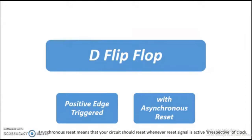First, we take the case where the D flip-flop is positive edge triggered and with an asynchronous reset. Asynchronous reset means that the flip-flop will be reset whenever the reset signal is active, irrespective of the clock. So whatever the clock state, if the reset signal becomes active, the D flip-flop will be reset. We will design this kind of D flip-flop using behavioral modeling.